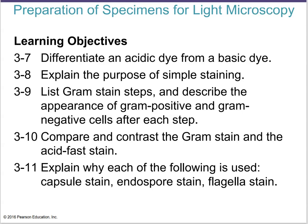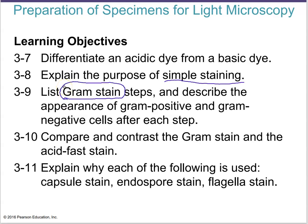In this section we're going to focus on staining specimens. The learning objectives are to differentiate the different types of dyes, understand the purpose of simple staining, and learn the gram stain — the all-important gram stain. We'll also look at the acid fast stain, capsule stain, spore stain, and flagella stain. Every microbiology student needs to know the steps of the gram stain, why it is so important, and actually be able to do it.